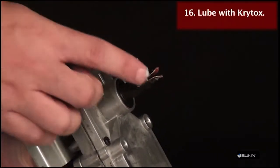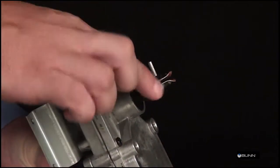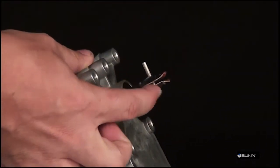Place a small amount of Krytox lubricant on the end of the motor shaft and a thin film in the groove. Do not use too much lubricant.